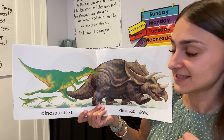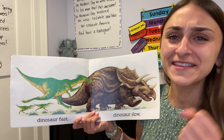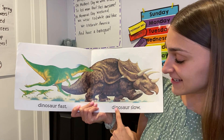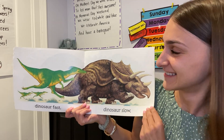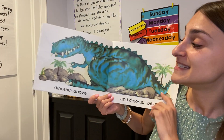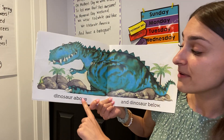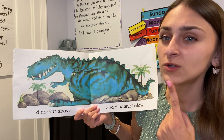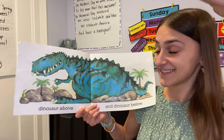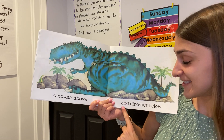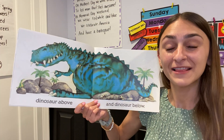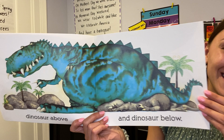Dinosaur Fast. What is the opposite of Fast? Dinosaur Slow. Dinosaur Above. Do you know the opposite of Above? Dinosaur Below. Above and Below are opposites.